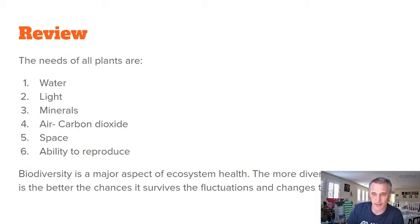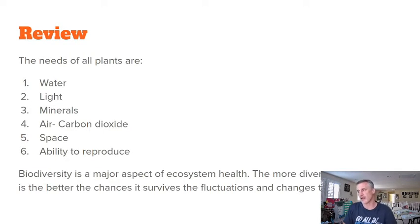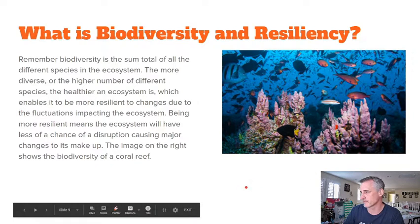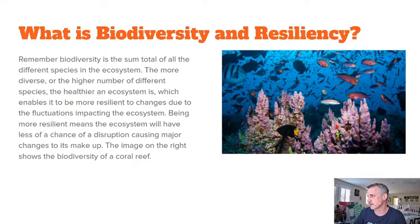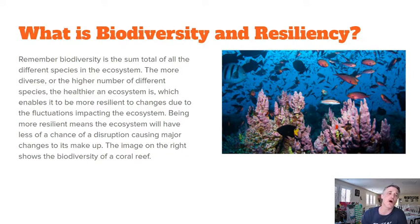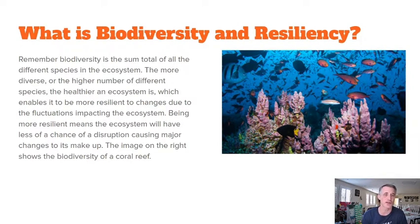Biodiversity is a major aspect of ecosystem health. The more diverse an ecosystem is, the better chance it has of surviving the fluctuations and changes it undergoes. Biodiversity is the sum total of all the different species in an ecosystem — it can also include genetic diversity and ecosystem diversity. The more diverse or higher the number of different species, the healthier the ecosystem will be, making it more resilient to disruptions and less likely to experience a major collapse.